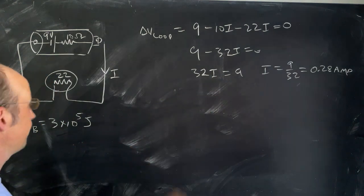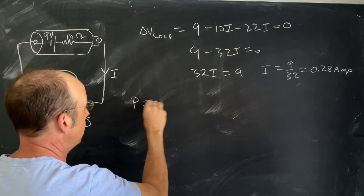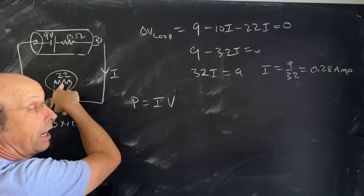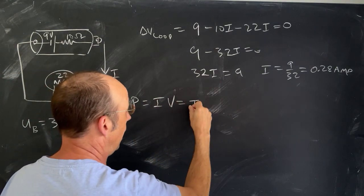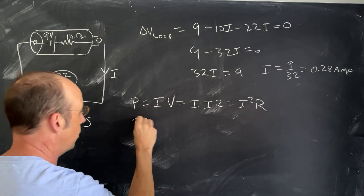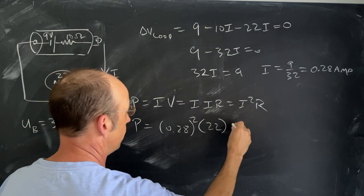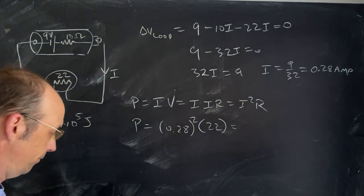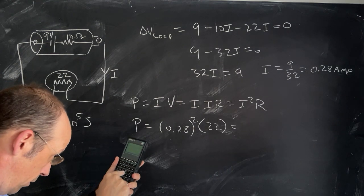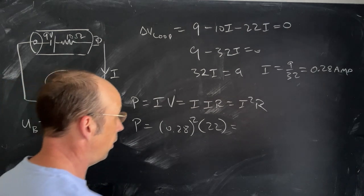Now I know the current, so I can calculate the power. Remember, power is i times v, but the voltage across that resistance is i times r. So this is going to be i times i times r, or i squared r. So the power is going to be i, 0.28 squared, times the resistance of 22. That squared, and then times 22, I get 1.74 watts.